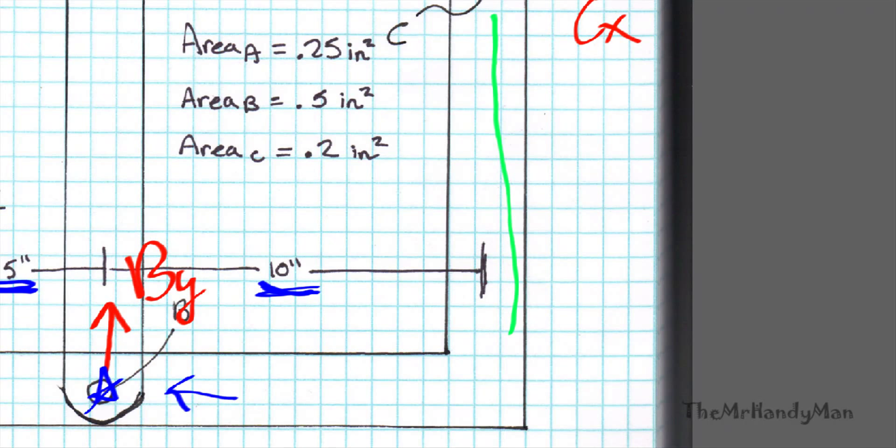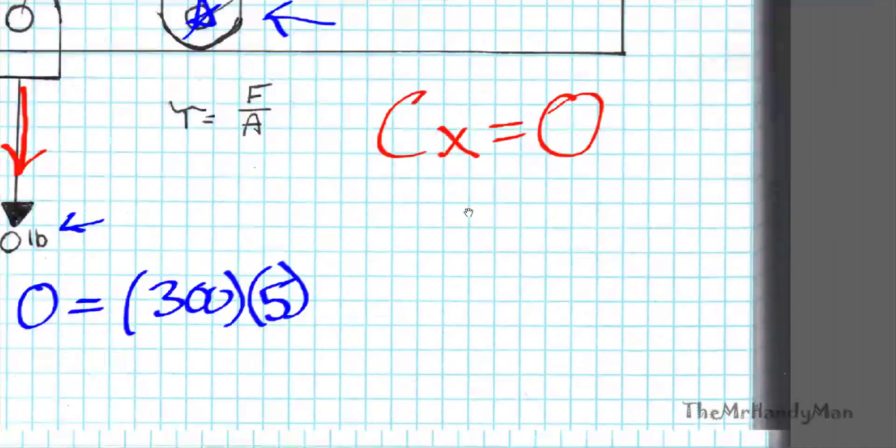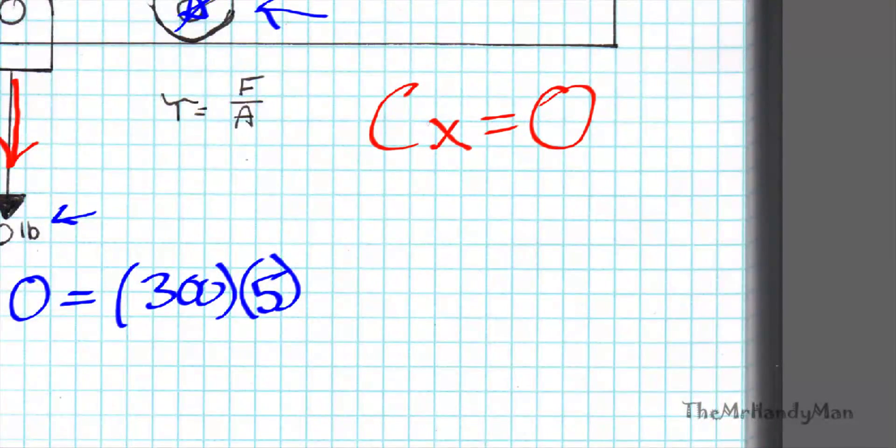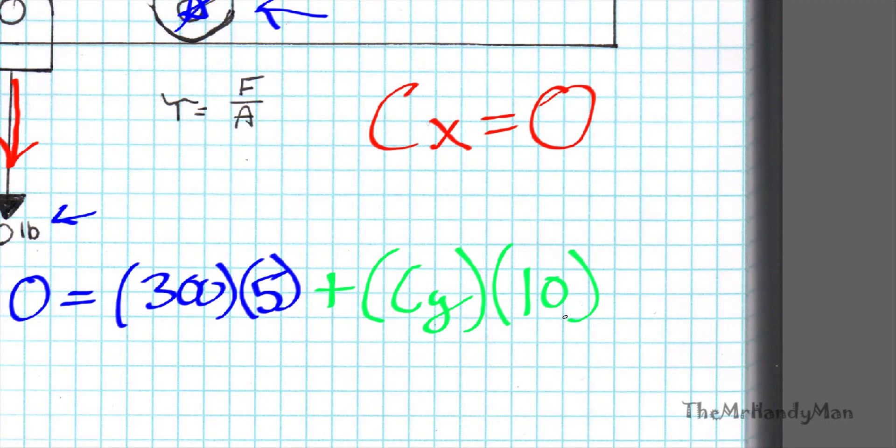Let me get rid of those and we can continue on. So, solving for this, it's going to be Cy times 10. Plus Cy times 10. And remember that equals zero. So I'm just going to solve for us that Cy should equal 150 pounds.